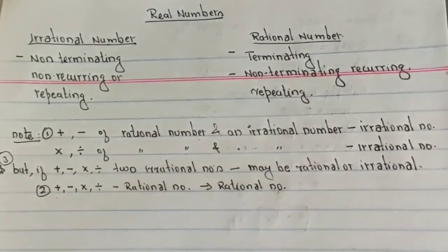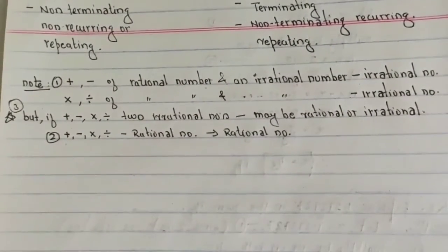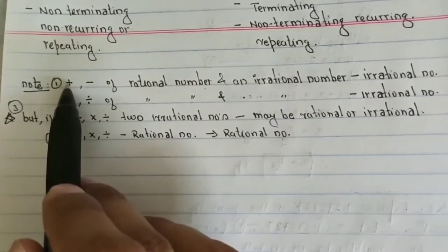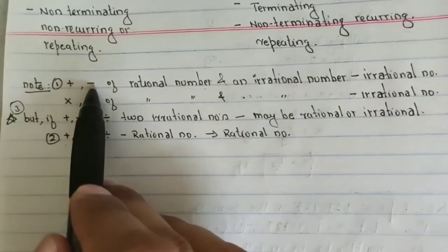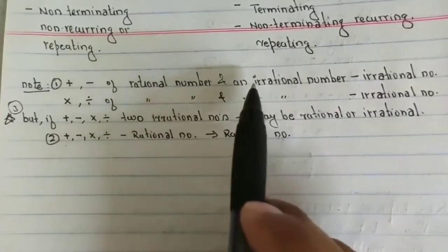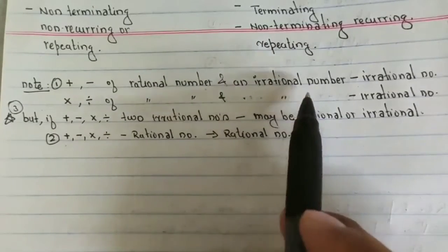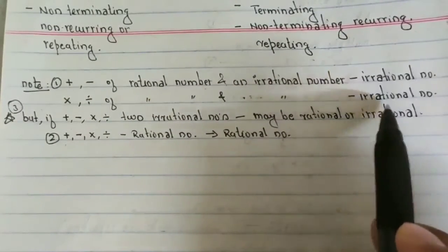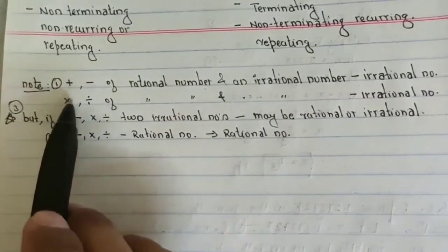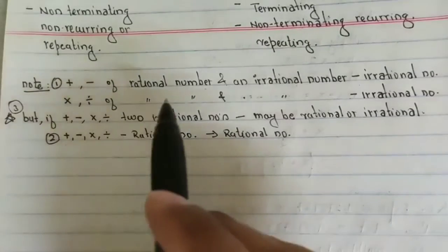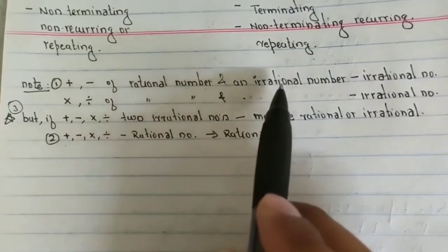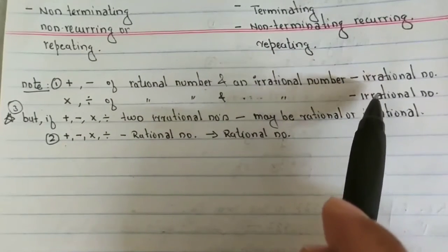Here are a few points to keep in mind. First, when you add, subtract, multiply, or divide a rational number with an irrational number, your answer will always be an irrational number. Similarly, when you add, subtract, multiply, or divide an irrational number with another irrational number, your answer will always be irrational.